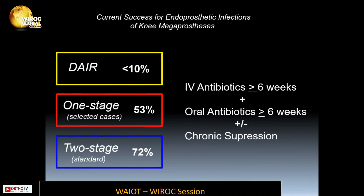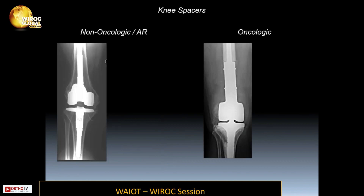The current success rates for endoprosthetic infections of knee megaprosthetics include the DARE operation at less than 10%, one-stage in selected cases at 53%, and two-stage — which is standard — at 72%. All approaches include intravenous antibiotics for a minimum of six weeks, followed by oral antibiotics for six weeks, and possibly chronic suppression.